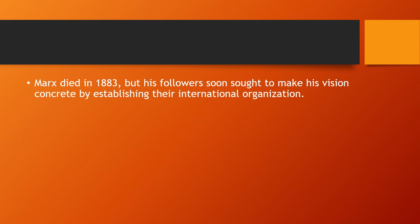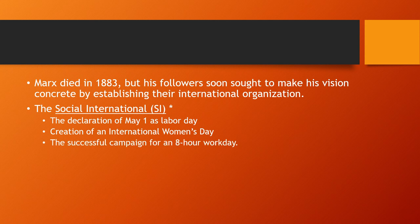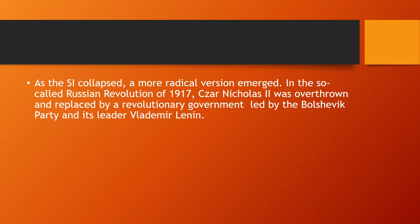Marx died in 1883, but his followers sought to make his vision concrete by establishing their international organization, known as the Socialist International — a union of European Socialist and Labor Parties established in Paris in 1889. Although short-lived, the SI's achievements included the declaration of May 1 as Labor Day, the creation of an International Women's Day, and the successful campaign for an 8-hour workday. The SI collapsed during World War I as member parties refused or were unable to join the internationalist efforts and many ended up fighting each other — a confirmation of Marx's warning that when workers take the side of their countries instead of each other, their long-term interests are confined.